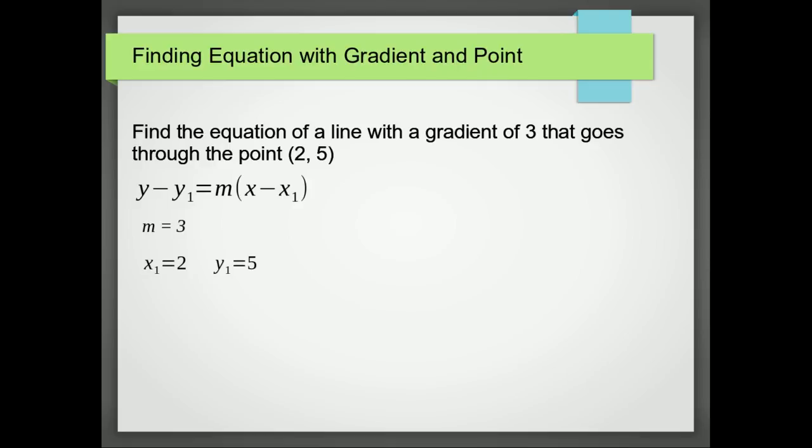So substituting those three values into the equation above, we get y minus 5 equals 3, open bracket, x minus 2. Now we could rearrange that to make it y equals, but we don't need to.